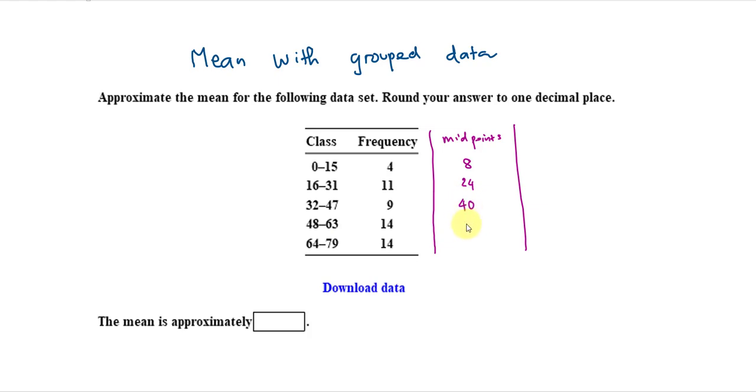Keep doing the same thing for the rest of the rows. Then, you should get 48 plus 64, divide by 2, which gives 56. And you see that to get from 8 to 24, they are 16 units apart. And then, 24 to 40, they are also 16 units away.